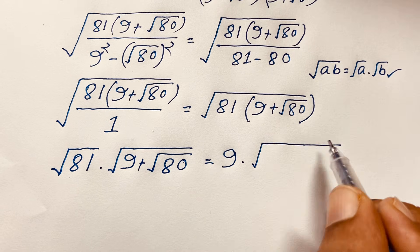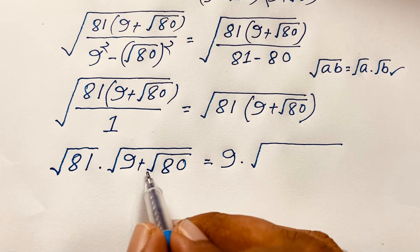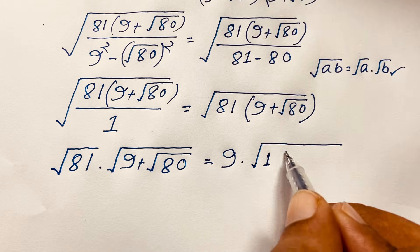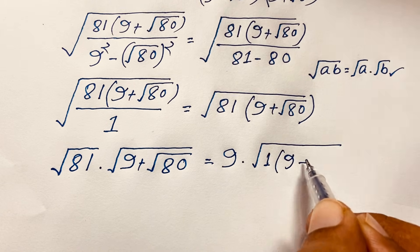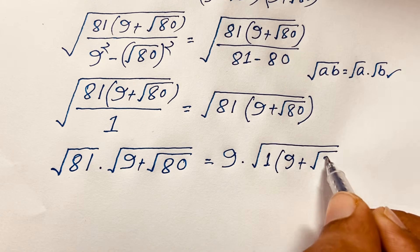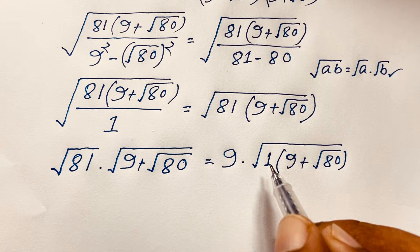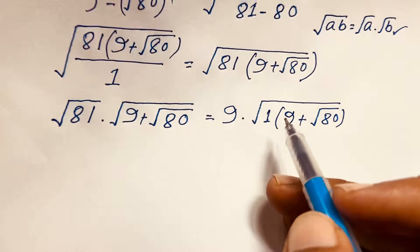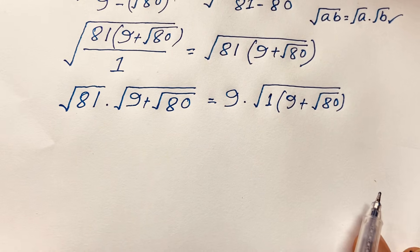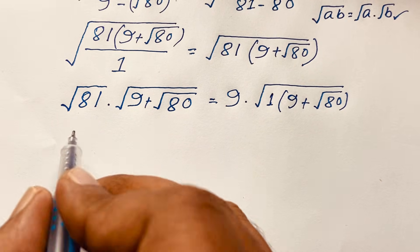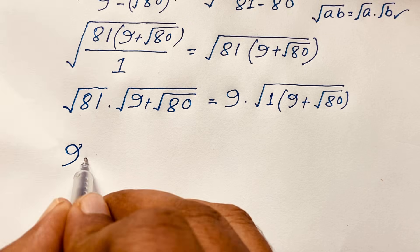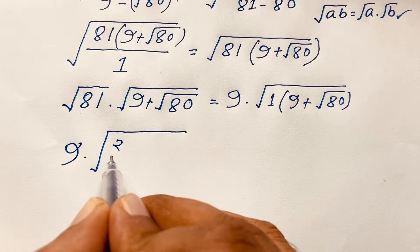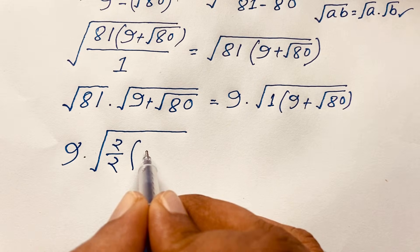So the expression becomes square root of 1 times (9 plus square root 80). I want to apply a math formula here, so I rewrite this and take 1 over 2, setting up the expression as square root of (9 plus square root 80) squared over 2.